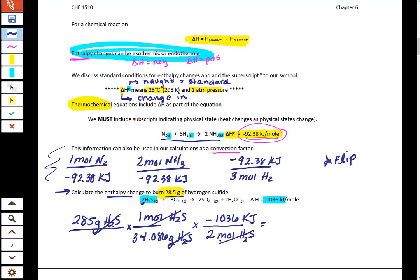Now our moles of hydrogen sulfide cancel out and we can put this into our calculator and get negative 433 kilojoules.